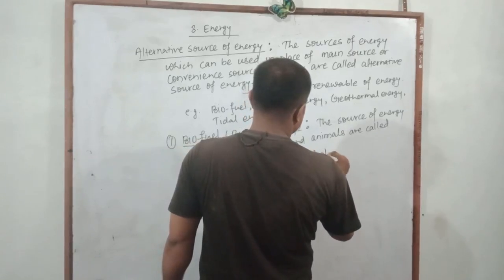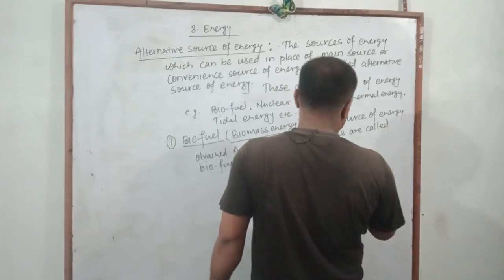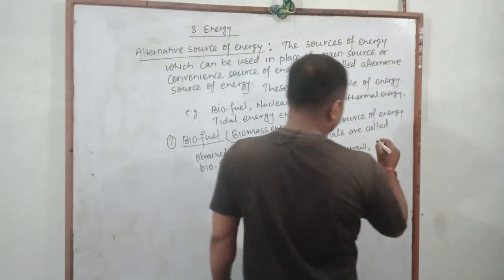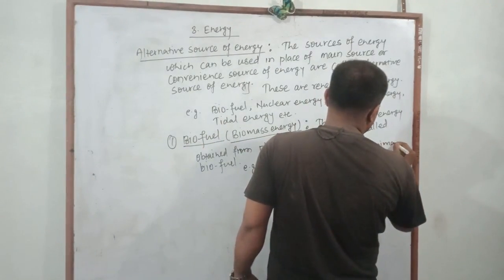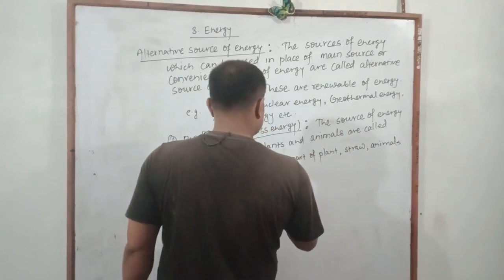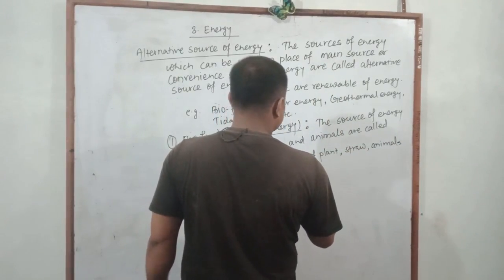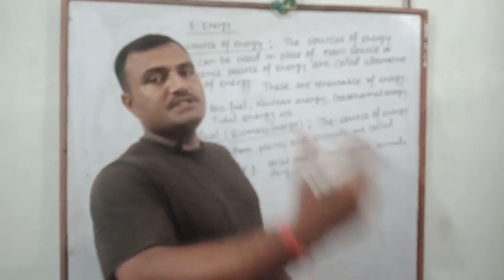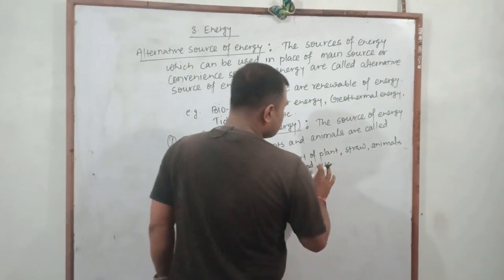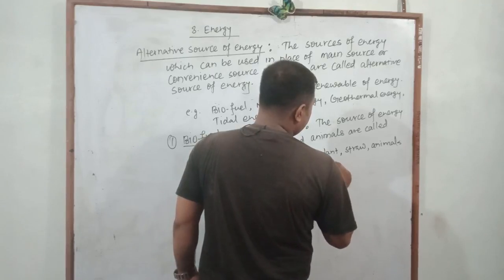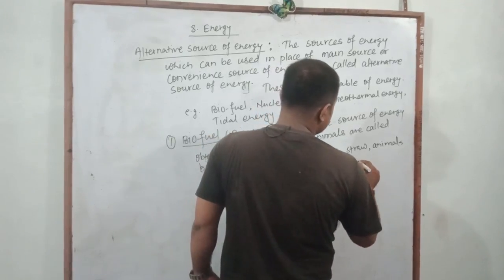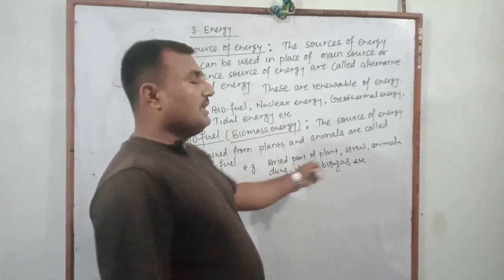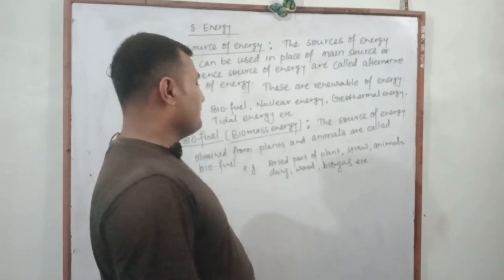Examples of biofuel energy are dried parts of plants, straw or agricultural straw residue, animal dung, wood, and when degradable or biodegradable wastage decomposes, it gives methane gas which is known as biogas. Biogas can also be used as a source of energy.